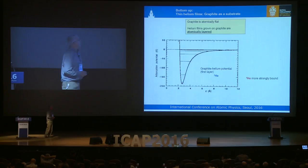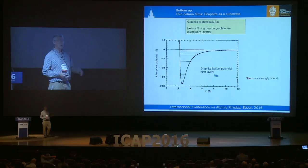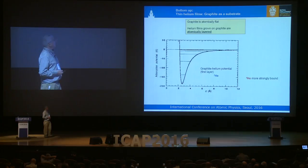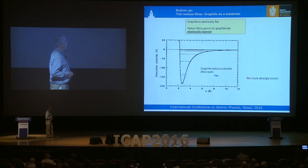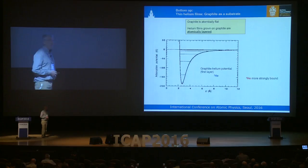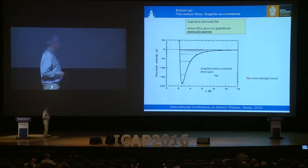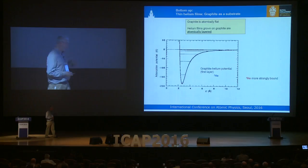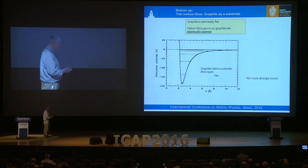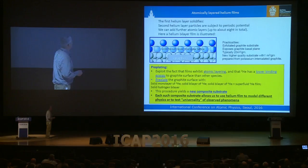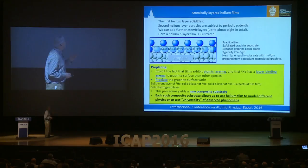In the bottom-up approach, we deposit helium on the surface of graphite. Graphite is atomically flat, and the adsorption potential of a helium-3 atom on graphite is extremely deep — this is the ground state with a binding energy of about 150 Kelvin. Helium-4 is more massive, so solving the Schrödinger equation gives more strongly bound helium-4 atoms. Because of this atomic flatness and the fact that helium behaves essentially as a hard sphere, helium films grown on graphite are atomically layered.